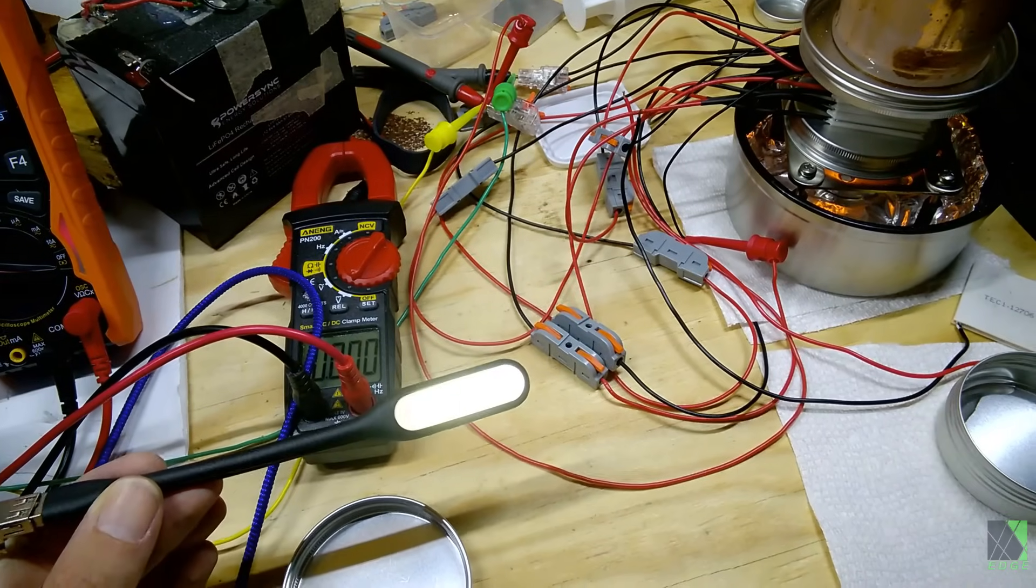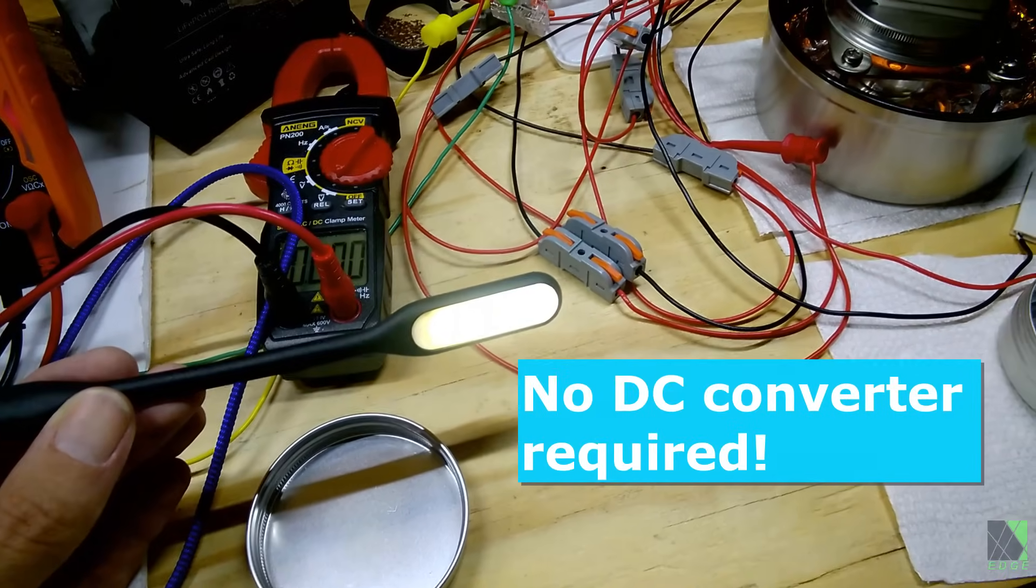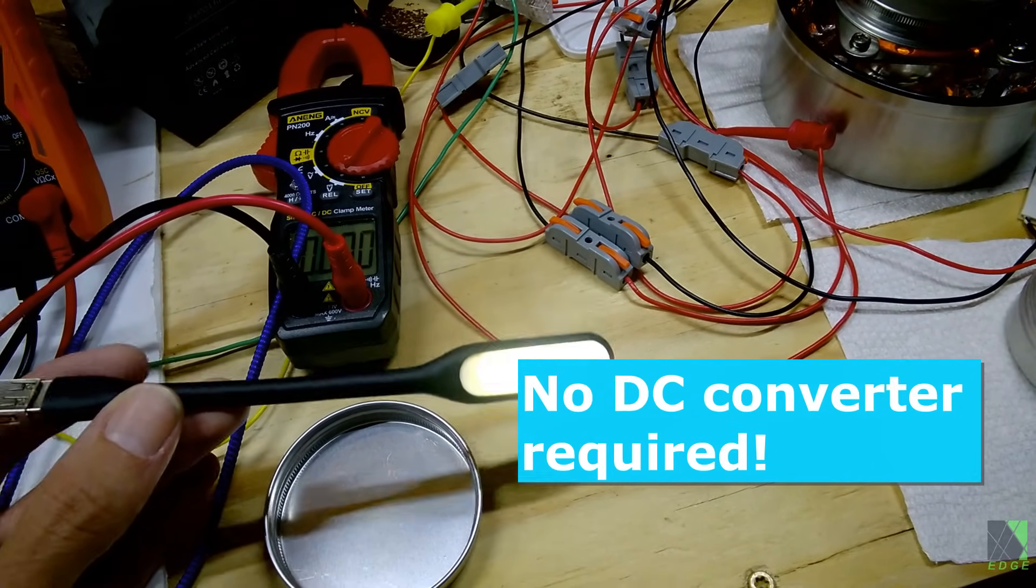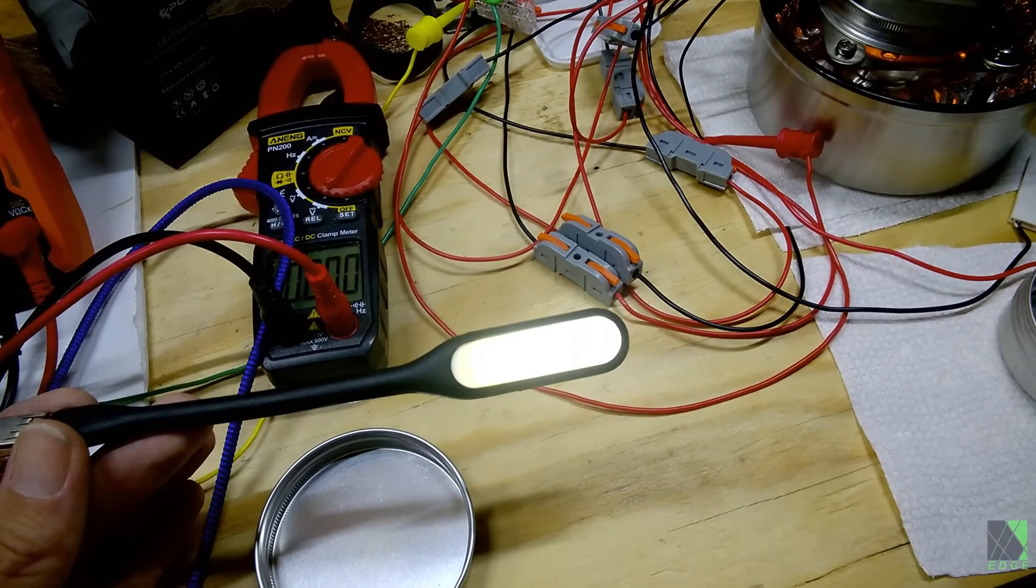And just for kicks, here's one of those USB lights running off the thermopile. I have it wired up to a USB connection, and it's not necessarily super bright, but it is running. So that's pretty interesting. That's a much simpler setup than running it through a USB circuit. Anyway, just a test to see if it's feasible or not, and apparently it is.